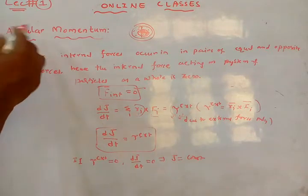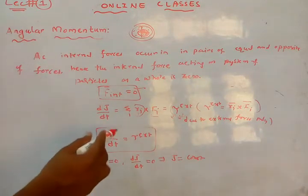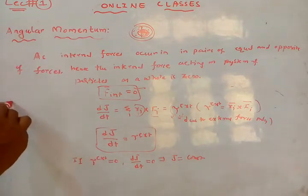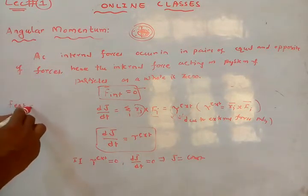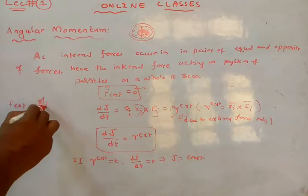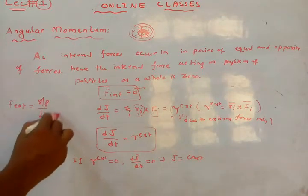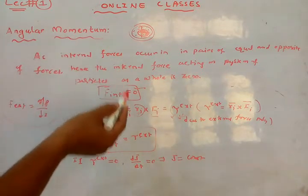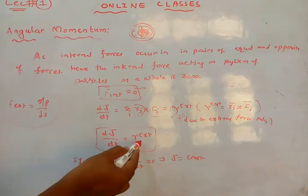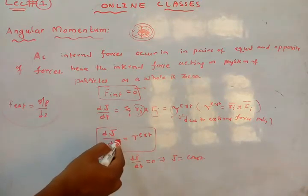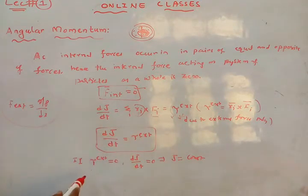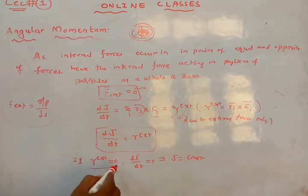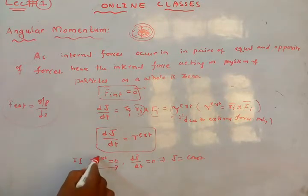The first theorem is conservation of linear momentum: F_external equals dp/dt. This is the first theorem. The second theorem is conservation of angular momentum: tau external equals dJ/dt. If tau external equals zero, the torque acting on the system externally is zero.